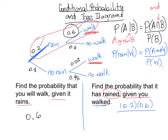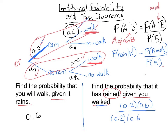The probability of walking can happen in two ways: rain and walk, or no rain and walk. The probability of walking overall is 0.2 times 0.6 plus 0.8 times 0.05. When you type that into your calculator, your answer should be 0.75.